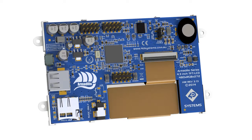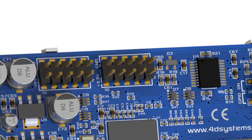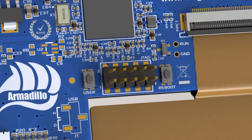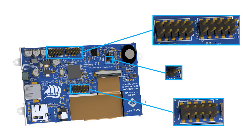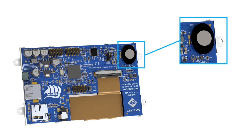The Armadillo is packed with 13 GPIO which has two single I2C channels, five single SPI channels, and two UART channels. Two PWM channels are also available, which is shared with the onboard amplifier with mini speaker.